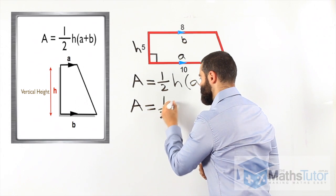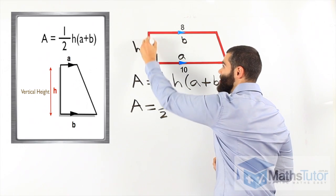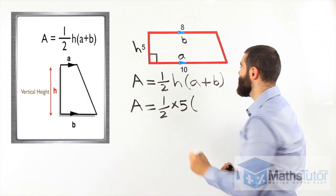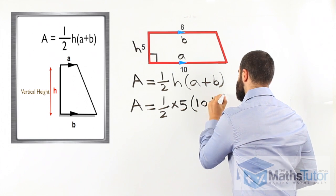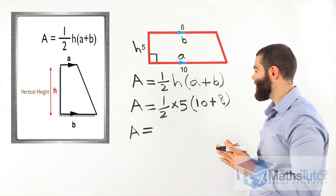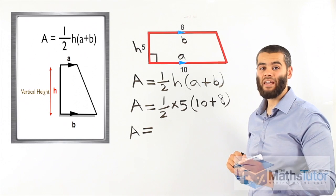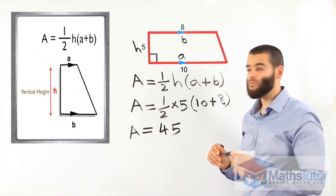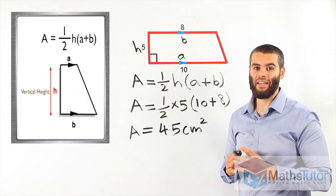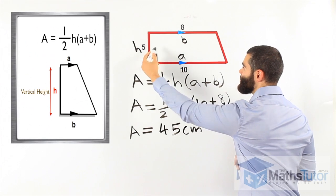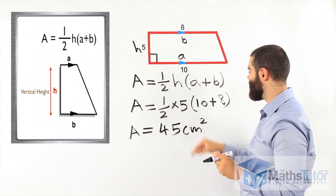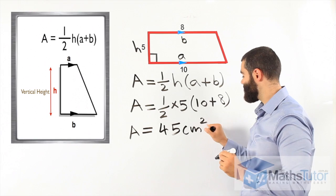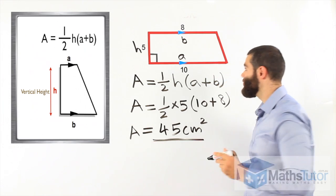Area equals half times the height. The height is 5 — the distance between the two parallel lines. a is 10 and b is 8. So: half times 5 times (10 plus 8). Put it in your calculator and you get 45. The measurements are in centimetres, so the area is 45 square centimetres. Remember, we always include units and since it's area, we put squared. That is the answer for this trapezium.